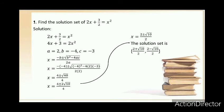We will find the values of a, b, and c. The value of a is 2, b is negative 4, and c is negative 3. Since this equation is not factorable, we will use the quadratic formula: x equals negative b plus and minus the square root of b squared minus 4ac over 2a.